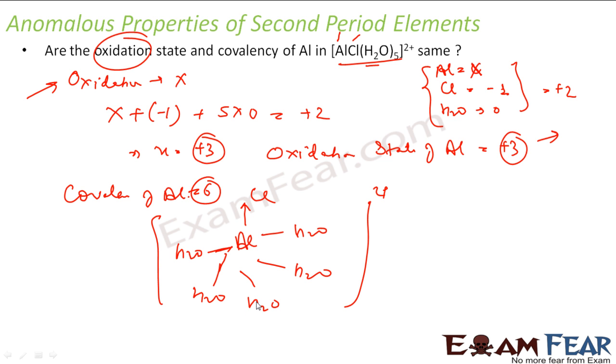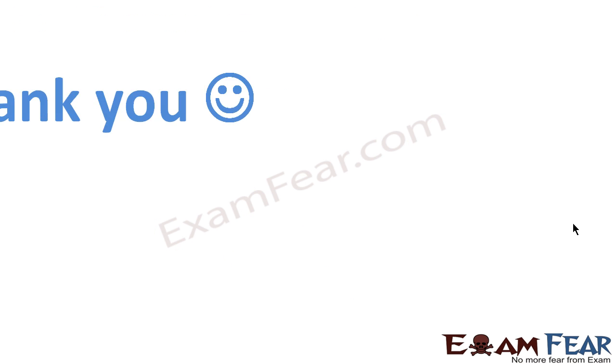And if you see both are different. So, you can see that oxidation state and covalency of aluminum in this particular case is not same. Oxidation state is something - you just assume it x and you know the oxidation state of chlorine and water and the overall oxidation state of the whole compound. With that, you can find the oxidation state. Covalency is nothing but the number of covalent bonds it has made. You can just find the structure of this particular compound and you can get the number of covalent bonds it has made. You can get the covalency. Thank you.